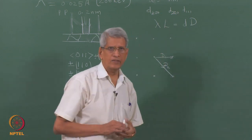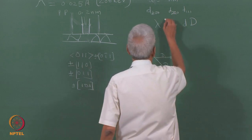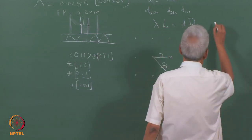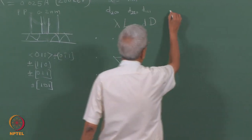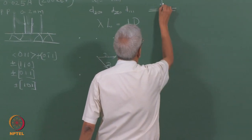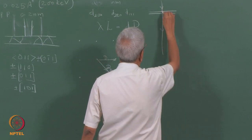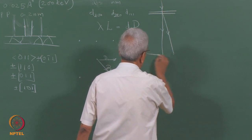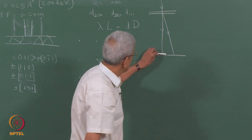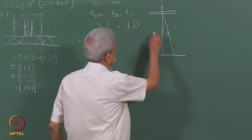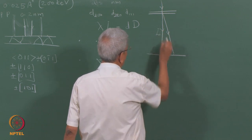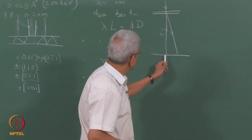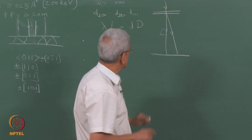Lambda is the wavelength of the radiation. L is the camera length — the distance from the sample to the imaging plane — which determines the magnification of the diffraction spots. The product λL is called the camera constant. By knowing the camera constant and measuring the distance of a diffraction spot from the central spot, we can use this formula to get information about the d-spacing of the planes responsible for the diffraction.